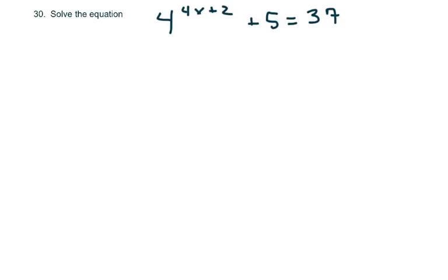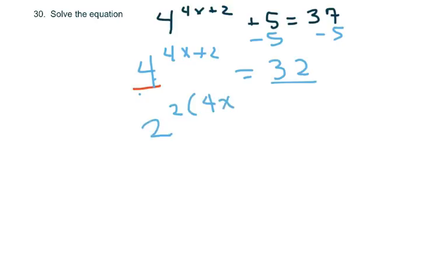The last one, I'm going to just solve for x. So we have 4 to the 4x plus 2. I'm going to subtract 5 from both sides. So that gives me 32. Now before I can solve, I have to have the same basis here. So I'm going to change my base to 2. So 4 is 2 squared. And that's going to be times whatever's in my exponent. And 32 is 2 to the 5th.